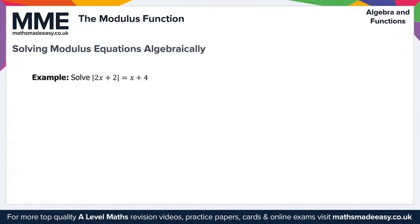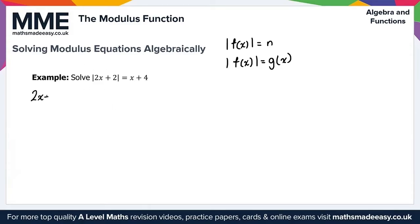Moving on to solving modulus equations algebraically. For equations of the form |f(x)| = n or |f(x)| = g(x), we solve algebraically. For example, to solve |2x + 2| = x + 4, we break this into two cases. First, for positive values: 2x + 2 = x + 4, which gives x = 2.